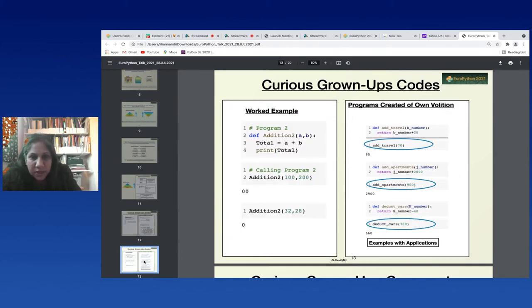Here now we introduce the adults, the curious adults, to a function called addition_2 which has two parameters a and b, and you call it a equals 100, b equals 200. They were introduced to it, it was explained, they played with it during the session, and then during the between sessions they went ahead of their own volition to create their own programs. Now you can see here they've created functions: add_travel, add_apartments, deduct_cars.